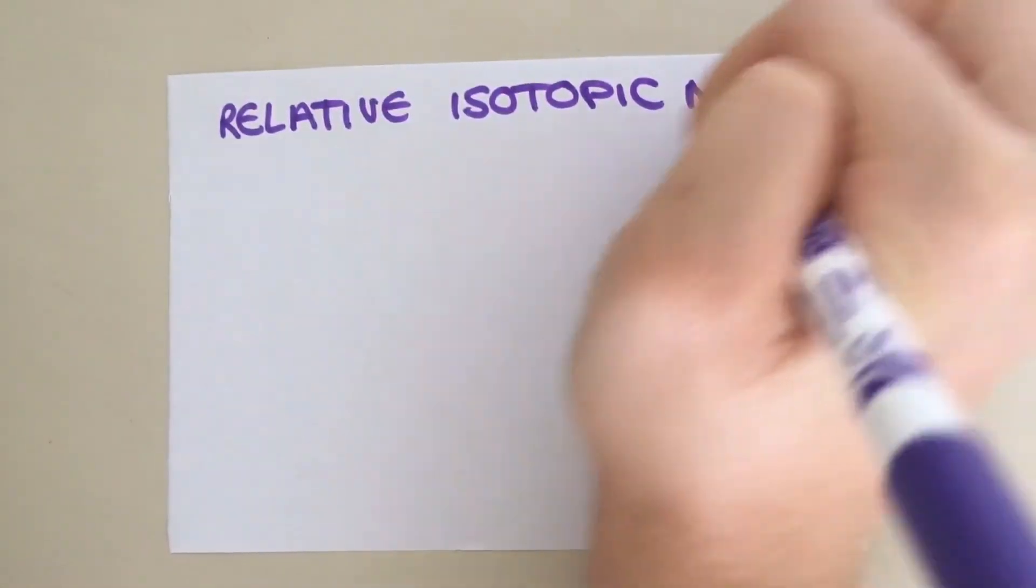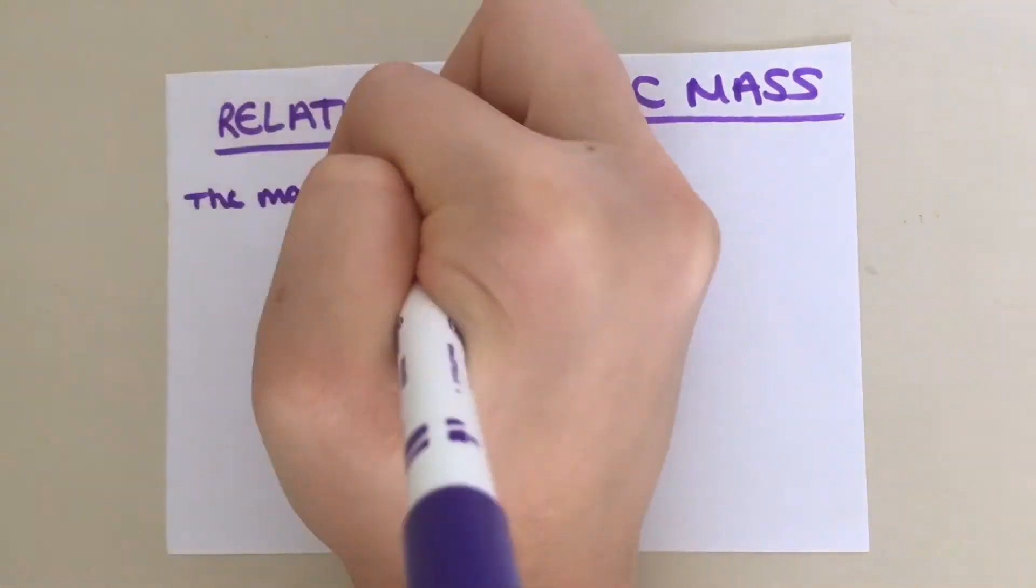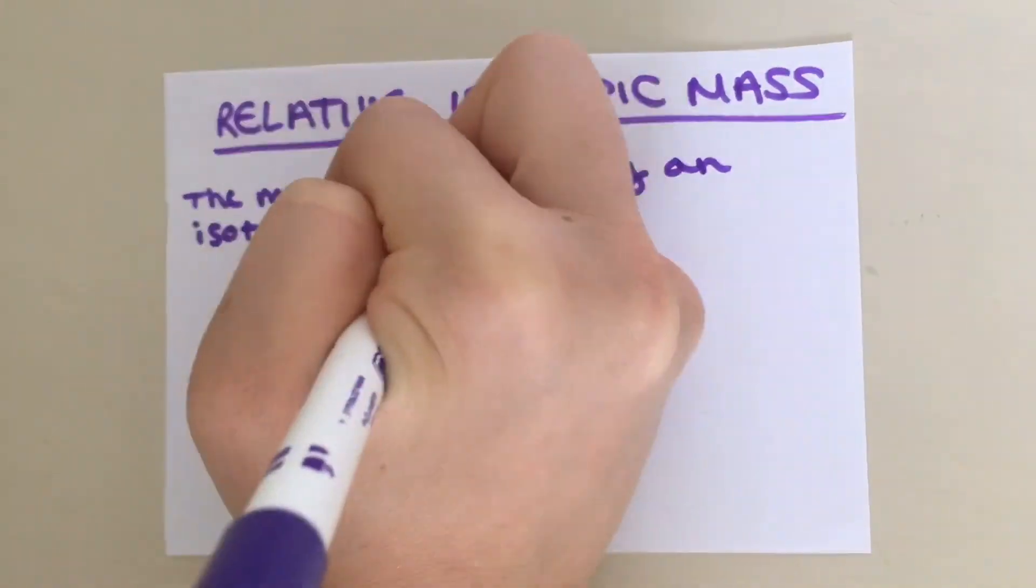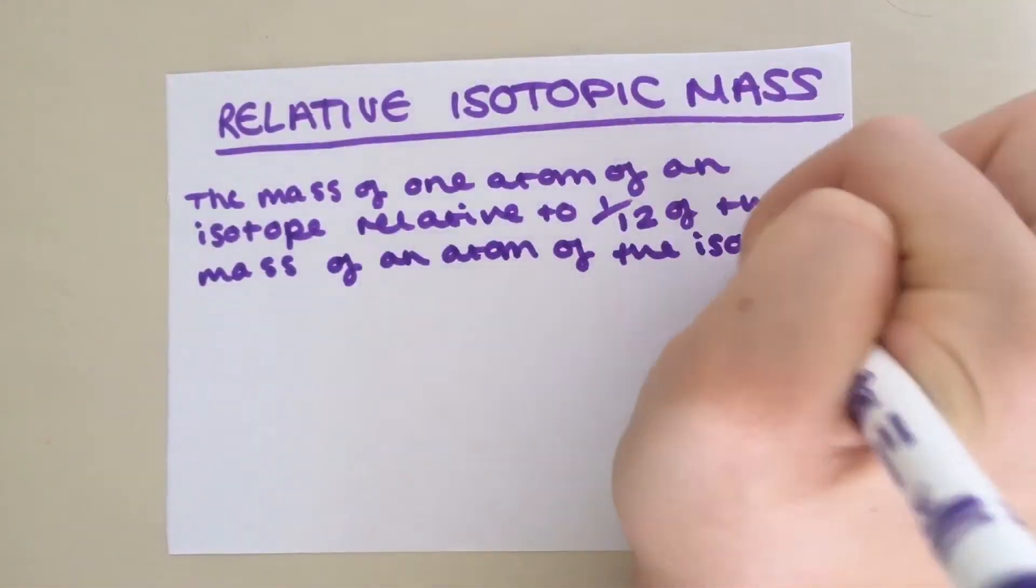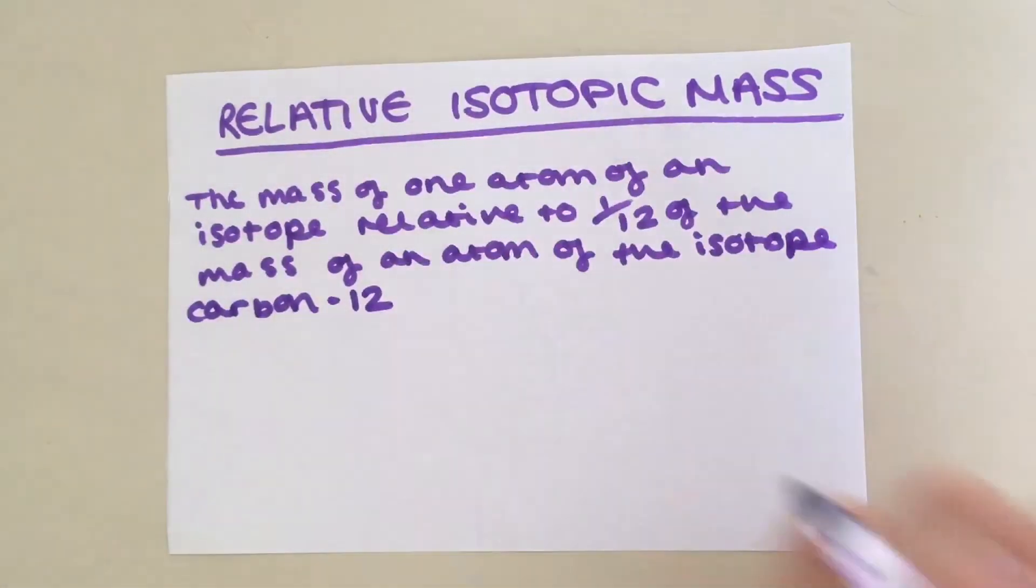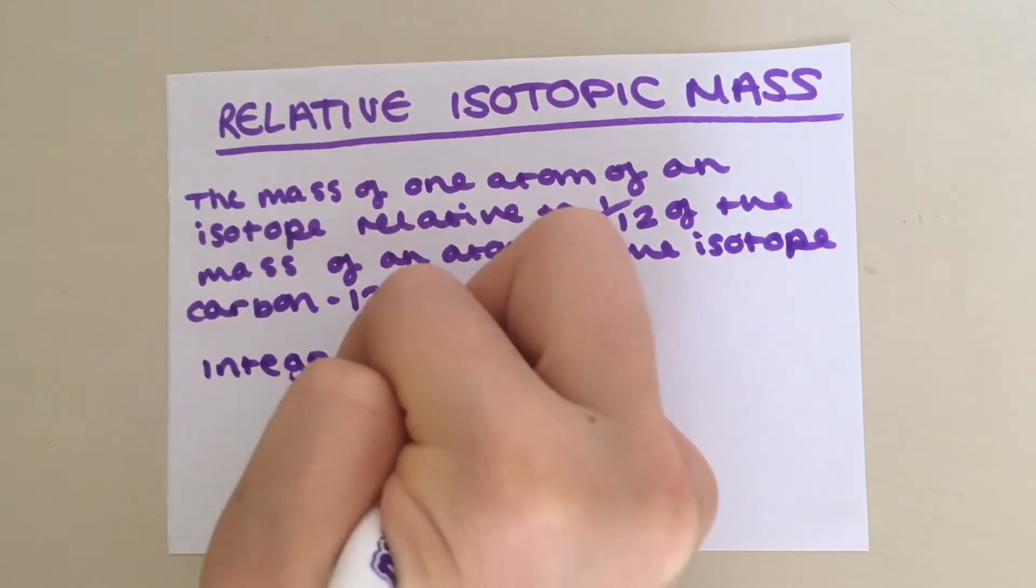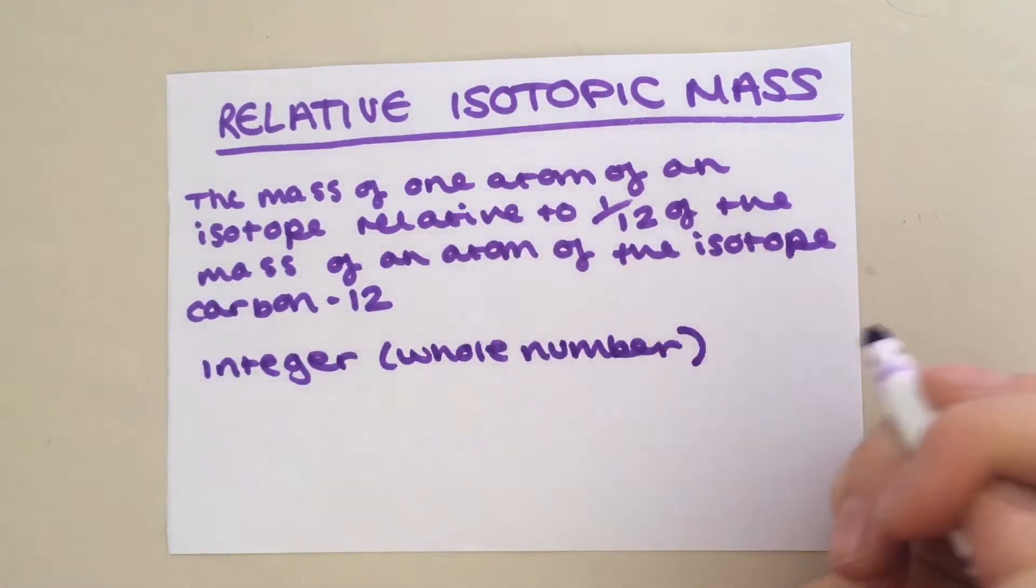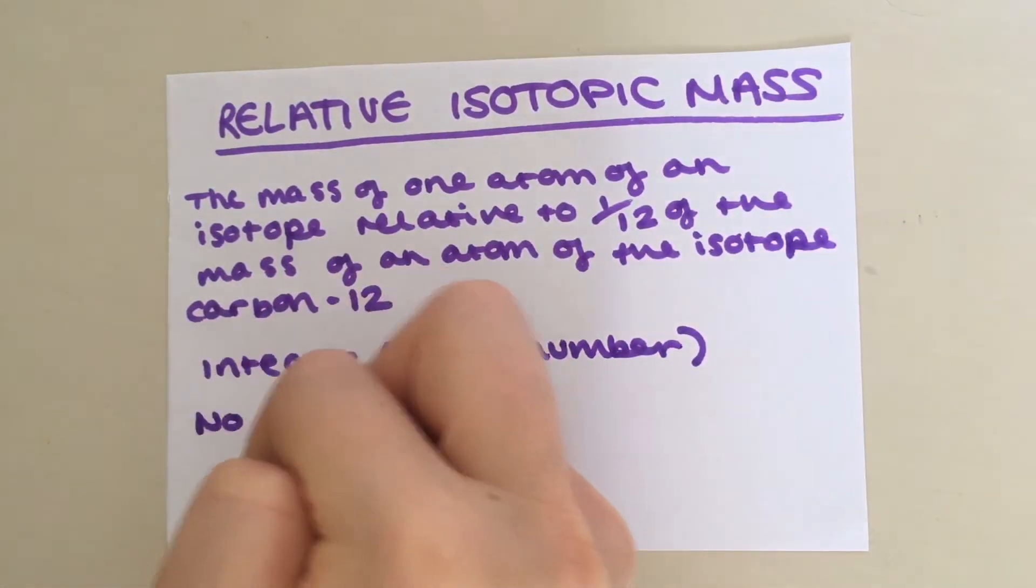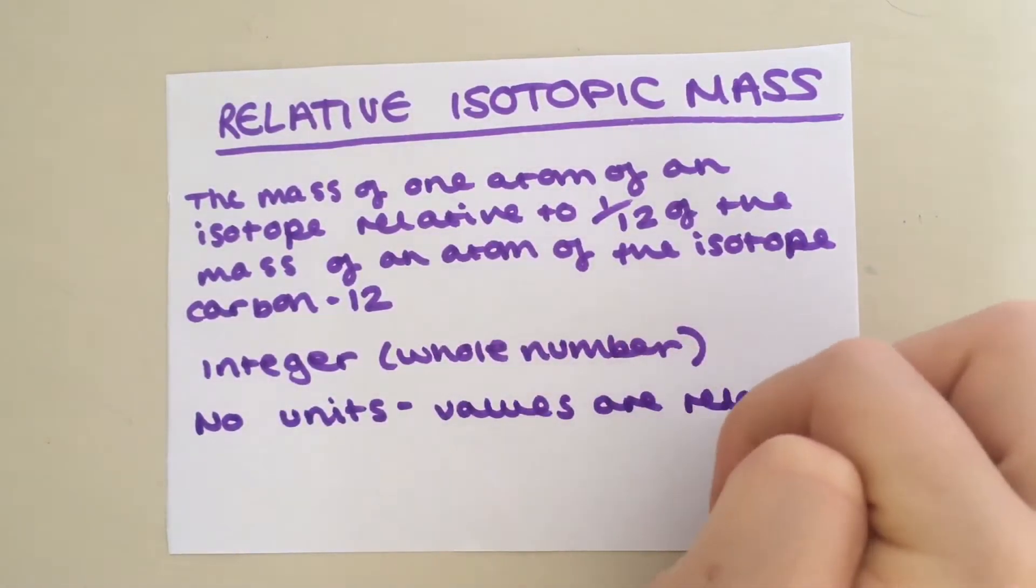Now let's take a look at relative isotopic mass. It is defined as the mass of one atom of an isotope relative to one twelfth of the mass of an atom of the isotope carbon-12. Since you can only have whole protons and neutrons, relative isotopic mass is always an integer, a whole number. It may be useful to note that relative isotopic mass doesn't have any units because the values are relative.